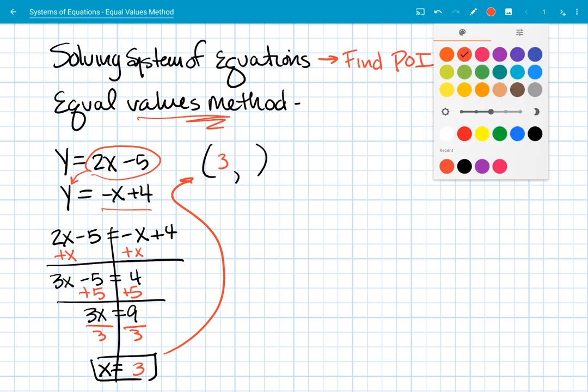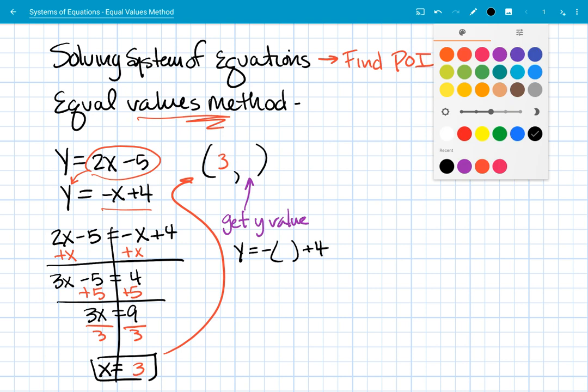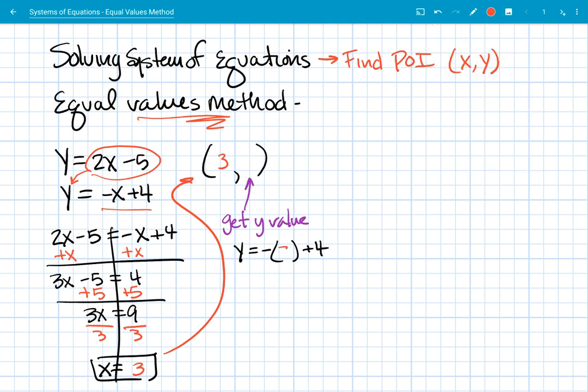Alright, now that's just part of it. We need to know what this y value is. So we're going to get the y value. And I'm going to use, I think I'll use the bottom equation, even though it's got the negative there. So y is the opposite of whatever x is, then add 4.